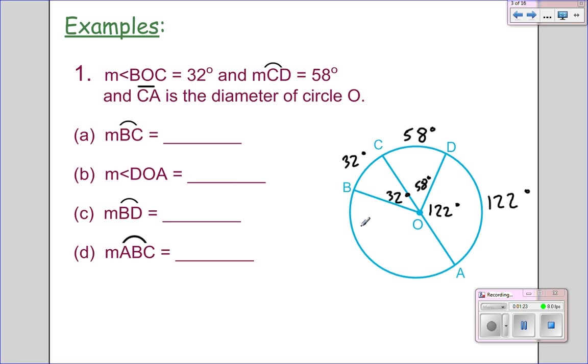Same thing, half circle 180 minus 32 gives me 148 and 148. So then of course we go in and fill in our blanks. Arc BC is 32 degrees. Angle DOA is 122 degrees. Arc BD is 32 plus 58 is 90 degrees. And arc A to B to C is 180 degrees.